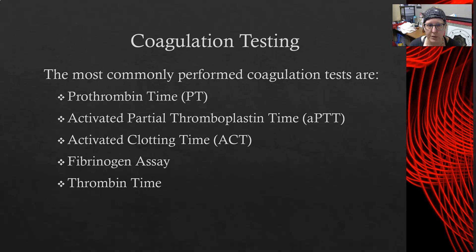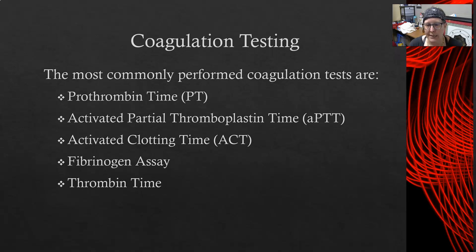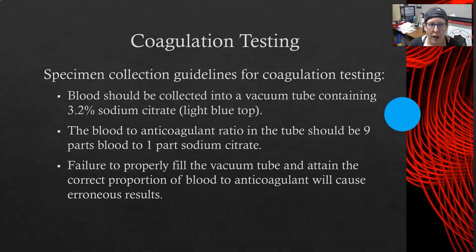So how do we test for coagulation and coagulation issues? The most commonly performed coagulation tests are the prothrombin time (PT) — usually shown as PT/INR on testing menus — the activated partial thromboplastin time (PTT or APTT), the activated clotting time, the fibrinogen assay, and the thrombin time.